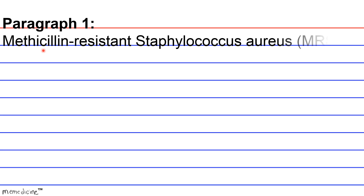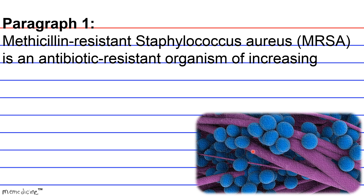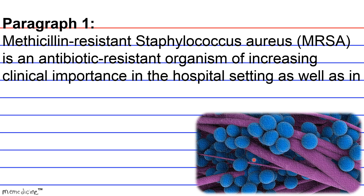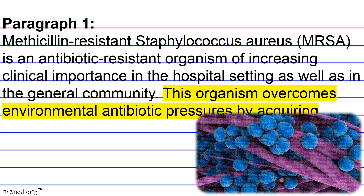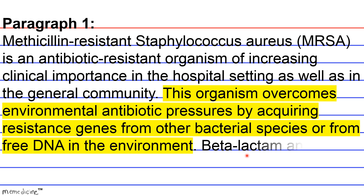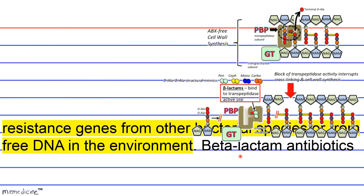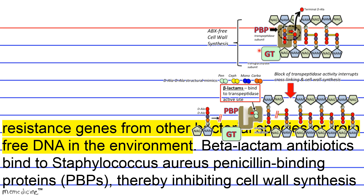Paragraph 1. Methicillin-resistant Staphylococcus aureus, MRSA for short, is an antibiotic-resistant organism of increasing clinical importance in the hospital setting as well as in the general community. This organism overcomes environmental antibiotic pressures by acquiring resistance from other bacterial species or from free DNA in the environment. Beta-lactam antibiotics bind to Staphylococcus aureus via penicillin-binding proteins, PBPs for short, thereby inhibiting cell wall synthesis.